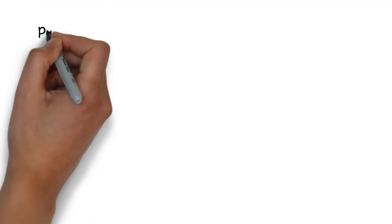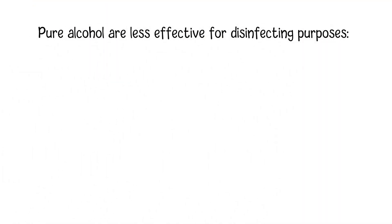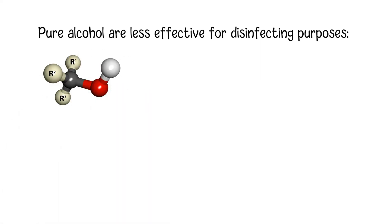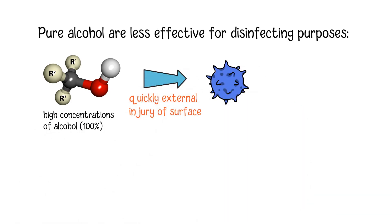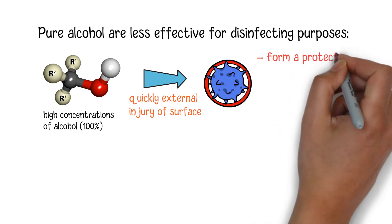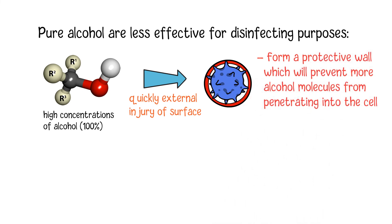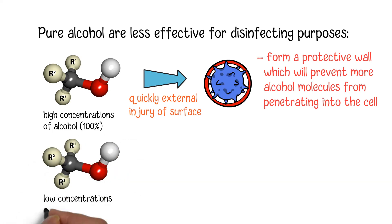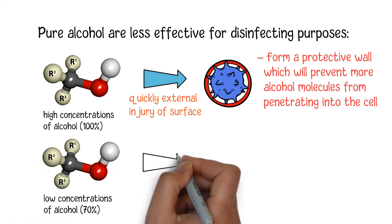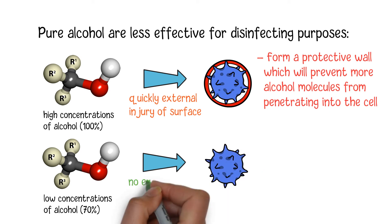The reason is that for disinfecting purposes, pure alcohol is less effective than one with a lower concentration level. When higher concentrations of alcohol reach the germs, it will quickly cause an external injury on the surface of the cell and then form a protective wall, which will prevent more alcohol molecules from penetrating into the interior of the cell. In comparison, 70 percent alcohol disinfectant can easily enter into the cells and function better.